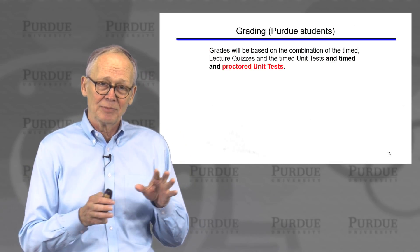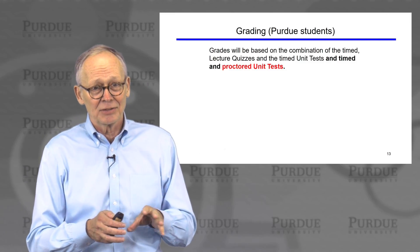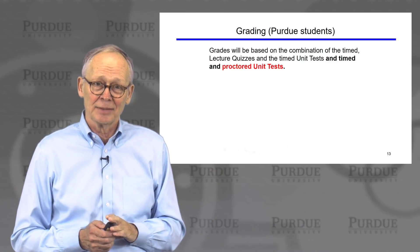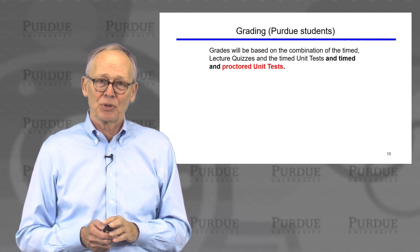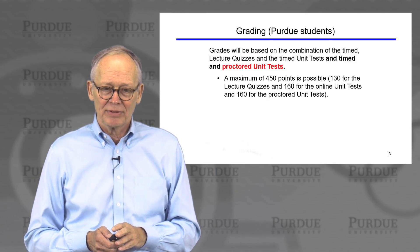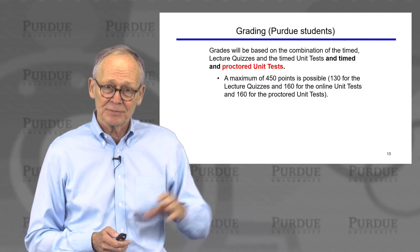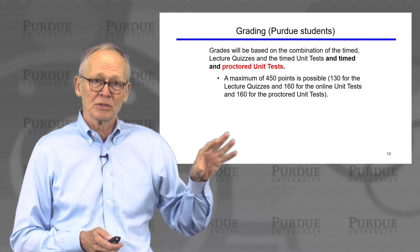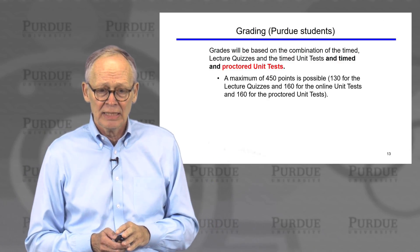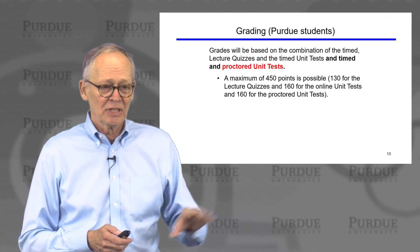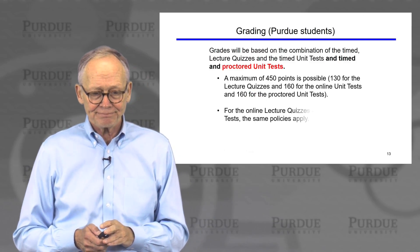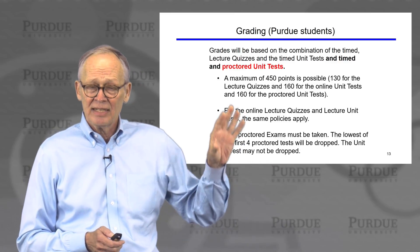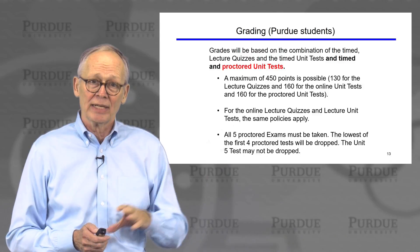If you're a Purdue student — and we have both online students and Purdue students taking the course on campus or through the Purdue online system — you will take those quizzes and online unit exams as well, but in addition, you'll take a proctored exam on campus. That proctored exam will be very similar to the unit exams, so the unit exams are a good way to prepare. Your lowest of the first four proctored exams will be dropped, adding another 160 points, giving Purdue students a total of 450 points possible.